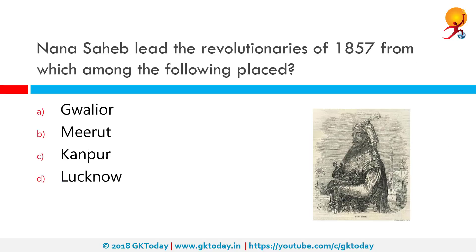Nana Sahib led the revolutionaries of 1857 from which among the following places? The correct answer is Kanpur. Nana Sahib was an Indian Peshwa of the Maratha Empire, an aristocrat and fighter who led the rebellion in Kanpur during the 1857 uprising. As the adopted son of the exiled Maratha Peshwa Bajirao II, Nana Sahib believed he was entitled to a pension from the English East India Company, which the company refused, leading to his rebellion.